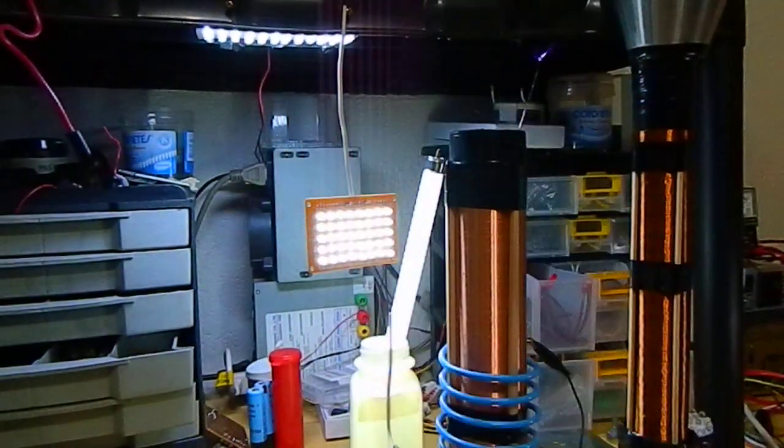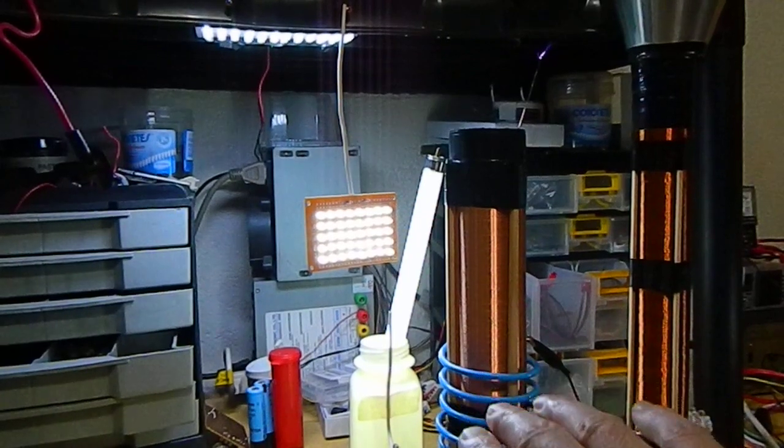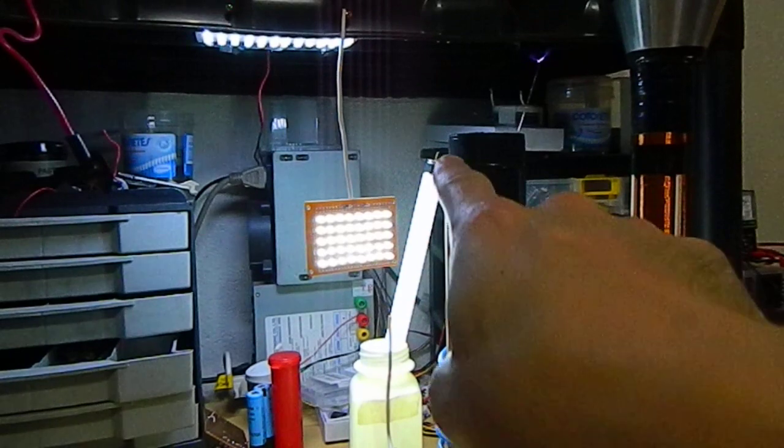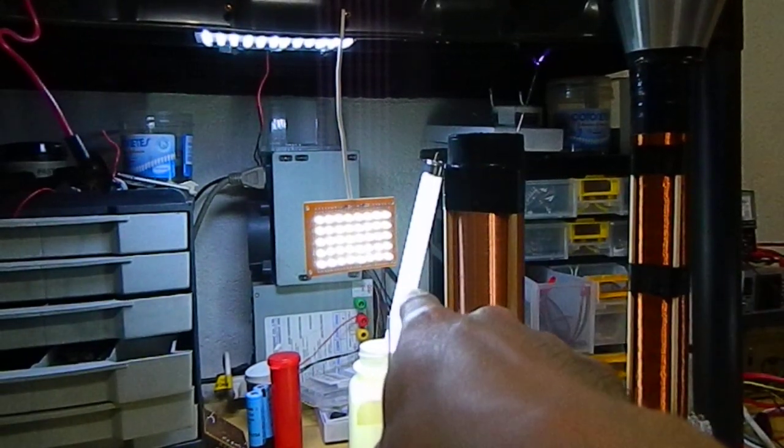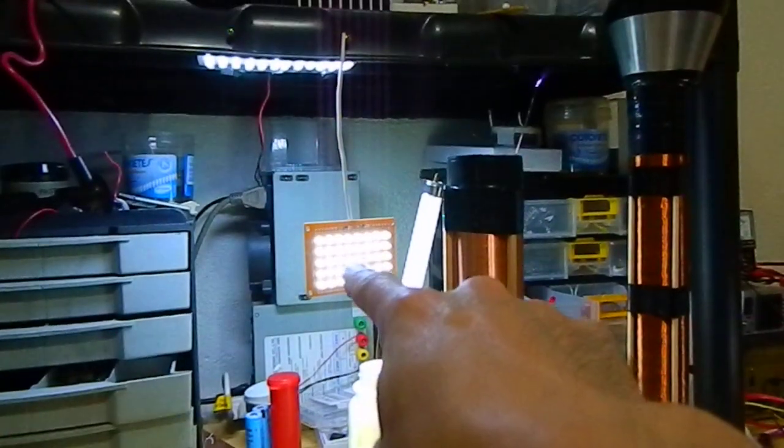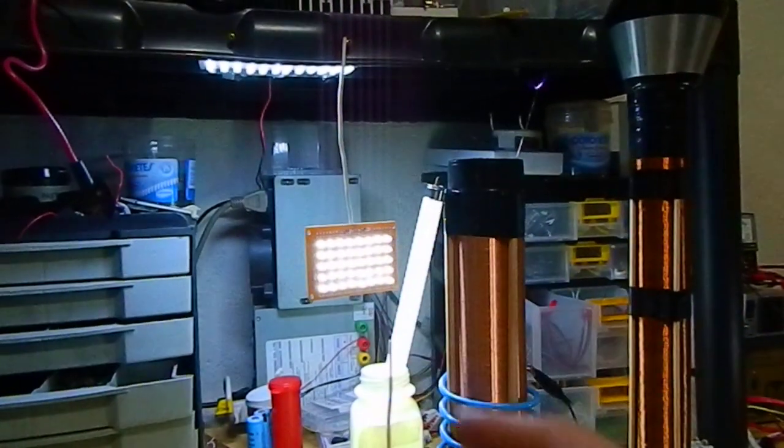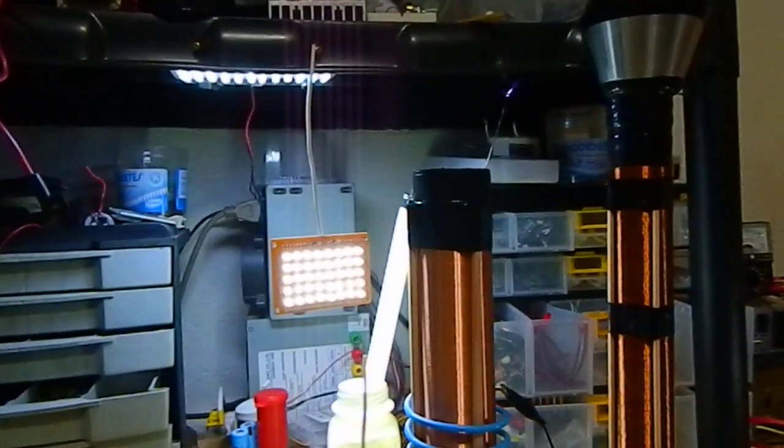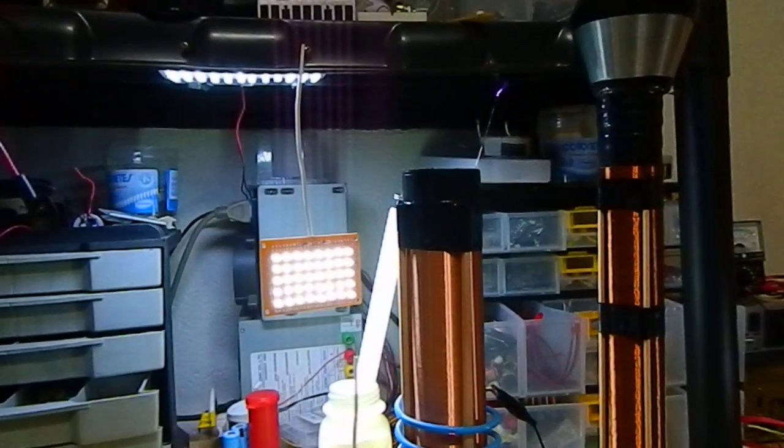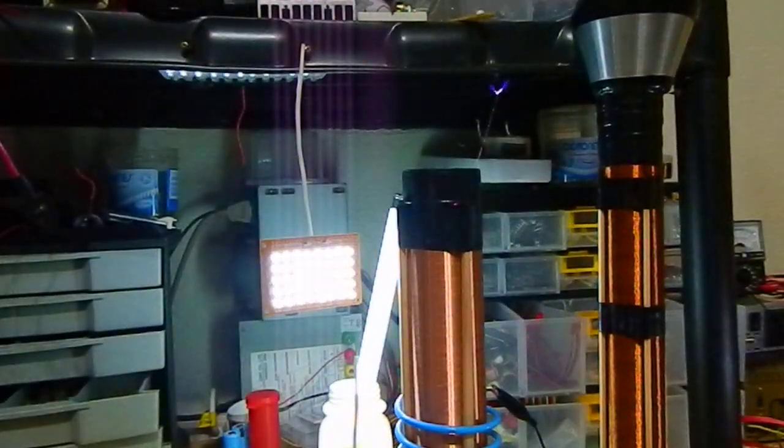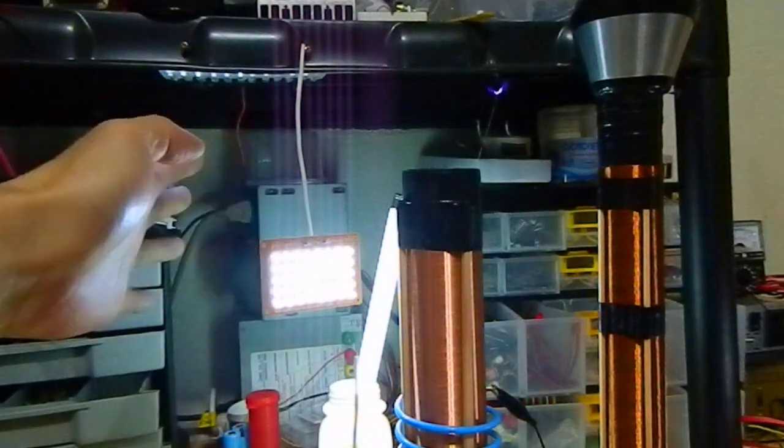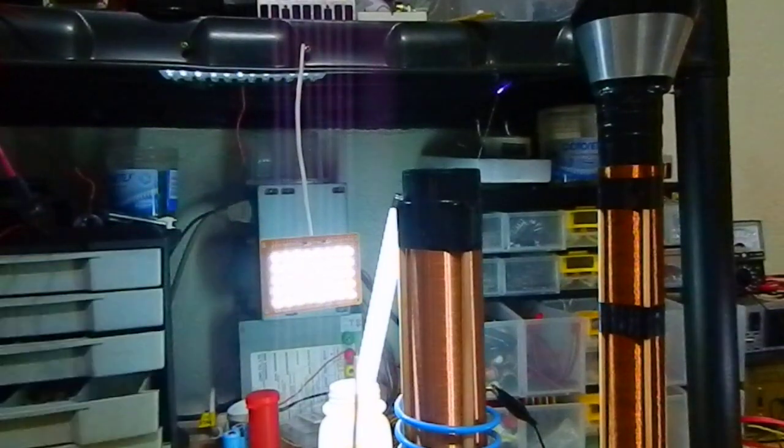And well, here on the Slayer Exciter is the same setup. I have the plasma. See if the tube is on. I have this LED cluster connected to an AV plug. And my LED lamps here are turned on. And if I turn them off, I still have them on just with the Slayer Exciter.